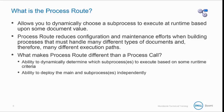The two key aspects that make process route different than a regular process call are the ability to dynamically determine which subprocess to execute based on some runtime criteria, and the ability to deploy the main and subprocesses independently.